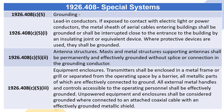1926.408(C)(5) — Grounding. 1926.408(C)(5)(i) — Lead-in Conductors. If exposed to contact with electric light or power conductors, the metal sheath of aerial cables entering buildings shall be grounded or shall be interrupted close to the entrance to the building by an insulating joint or equivalent device. Where protective devices are used, they shall be grounded. 1926.408(C)(5)(ii) — Antenna Structures. Masts and metal structures supporting antennas shall be permanently and effectively grounded without splice or connection in the grounding conductor. 1926.408(C)(5)(iii) — Equipment Enclosures. Transmitters shall be enclosed in a metal frame or grill, or separated from the operating space by a barrier, all metallic parts of which are effectively connected to ground. All external metal handles and controls accessible to the operating personnel shall be effectively grounded.